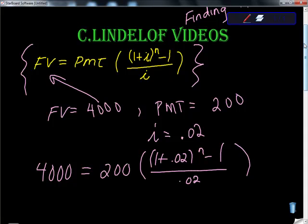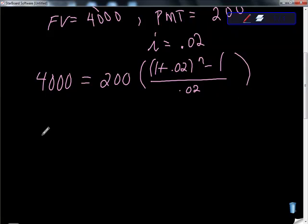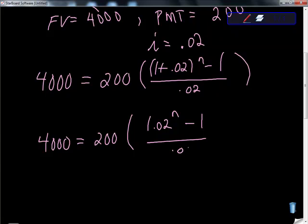I'm going to do some quick algebra here, just clean this up a little bit. Here we have our $4,000, $200 monthly payments. 1 plus 0.02 is 1.02, to the nth power minus 1, all over 0.02.